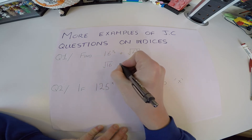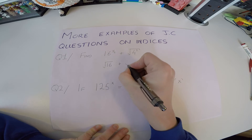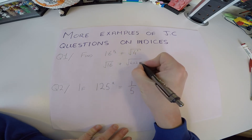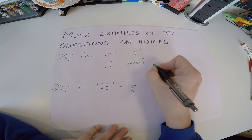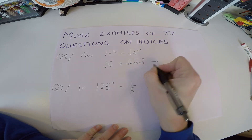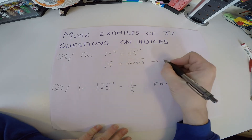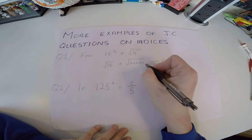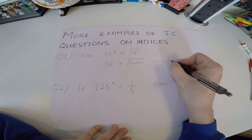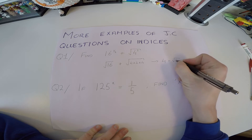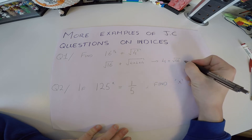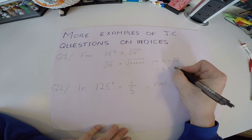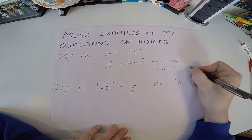Plus the square root of 4 cubed: 4 cubed is 4 × 4 × 4. The square root of 16 is 4, and 4 × 4 × 4 is 64, so that's the square root of 64, which is 8. So 4 plus 8 is equal to 12.